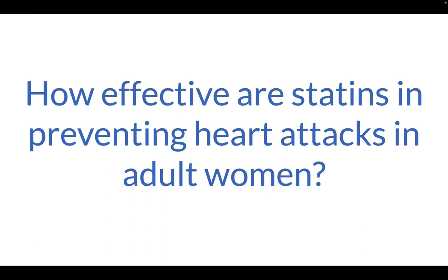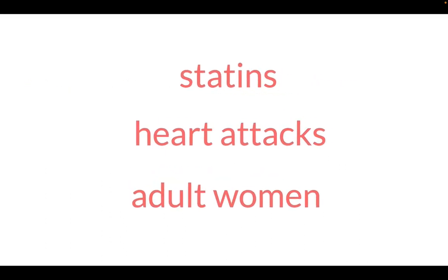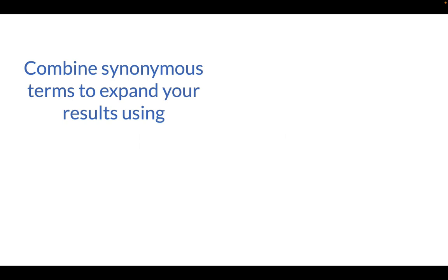Let's start with OR. In the beginning of a search you want to break up your question into individual topics. This question has three topics: heart attacks, adult women, and statins. We take each topic one at a time. Let's start with heart attacks. The first step is to brainstorm as many synonyms for that topic as we can, because different authors may use different words to describe the same topic. We need to combine our synonymous terms using OR.